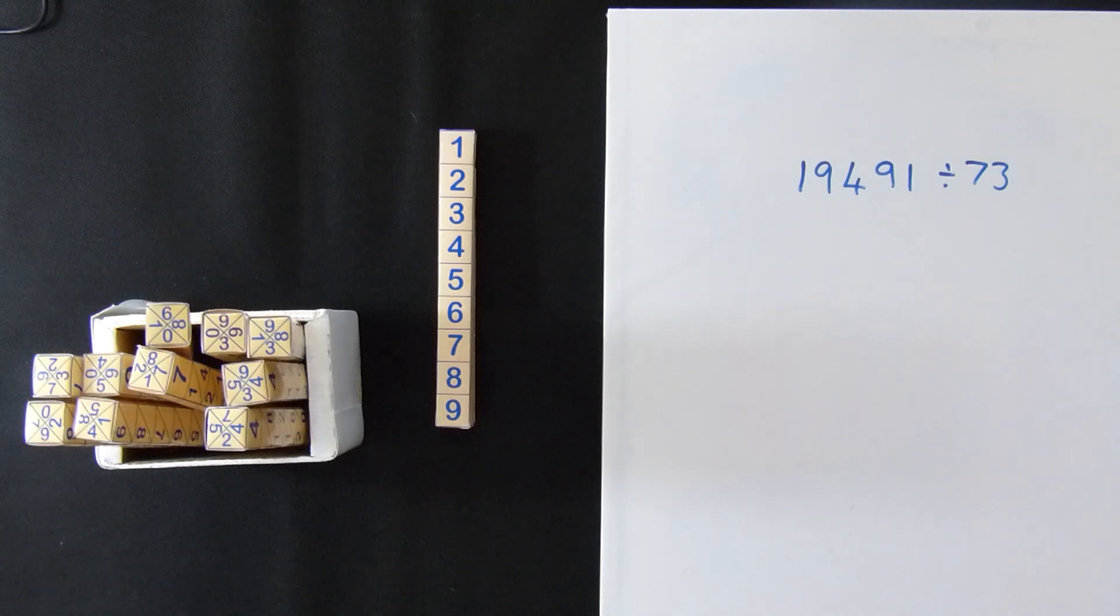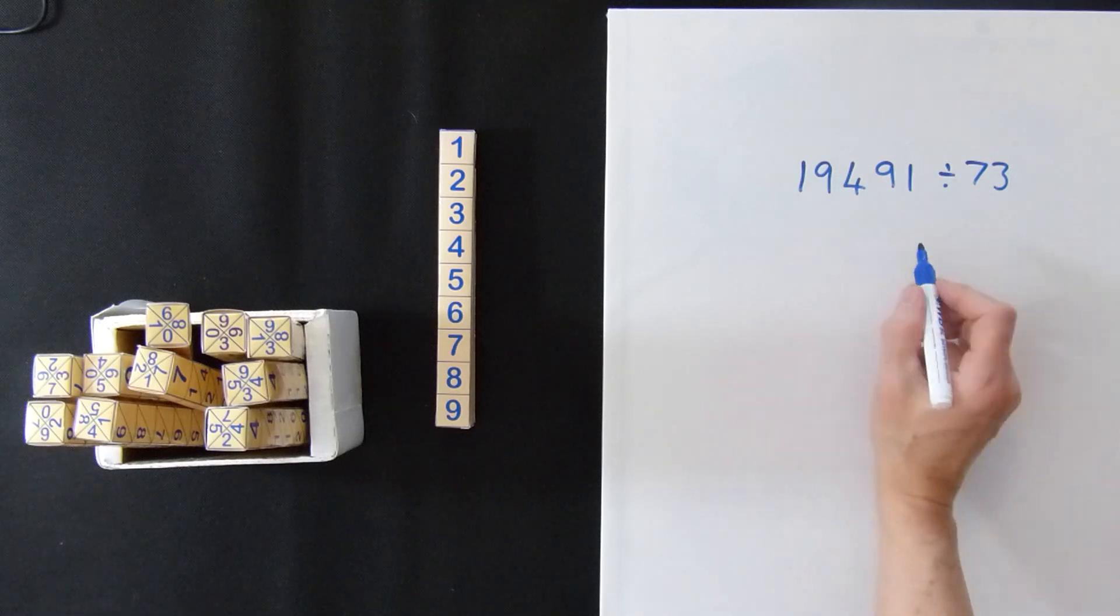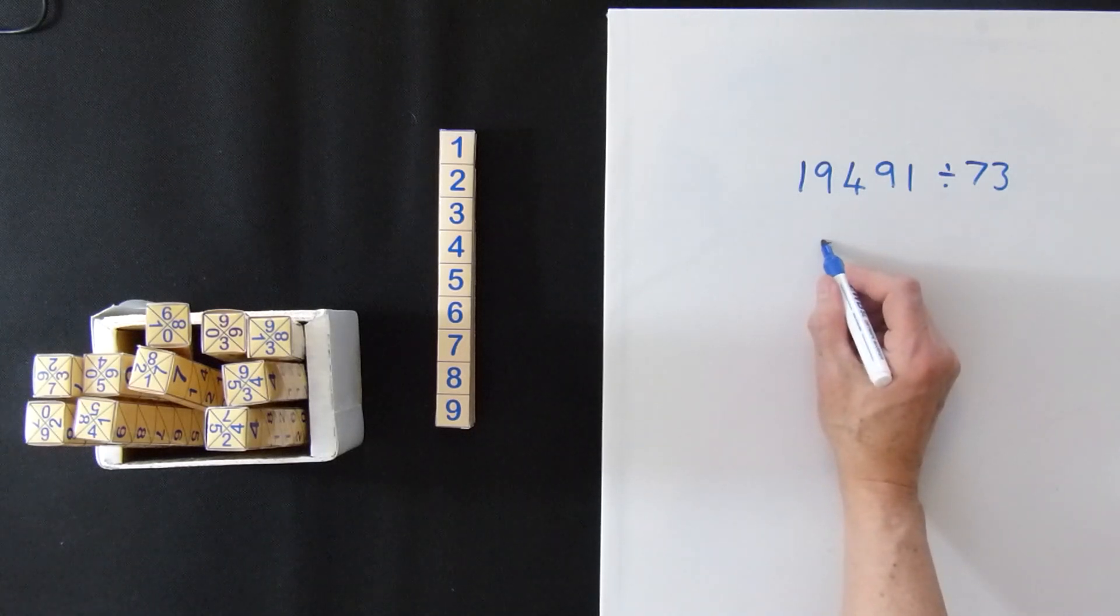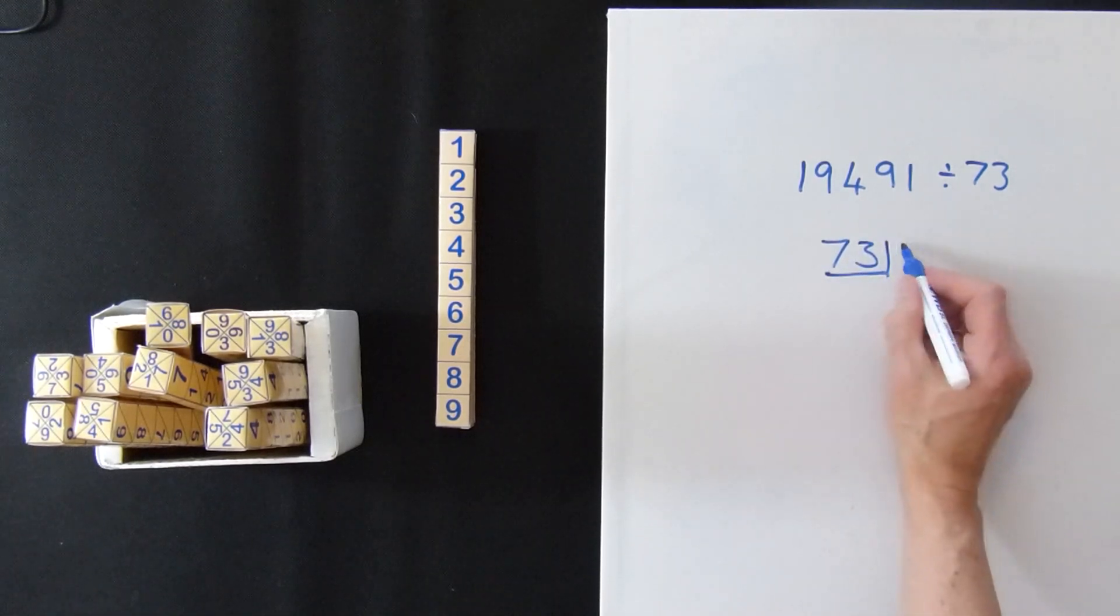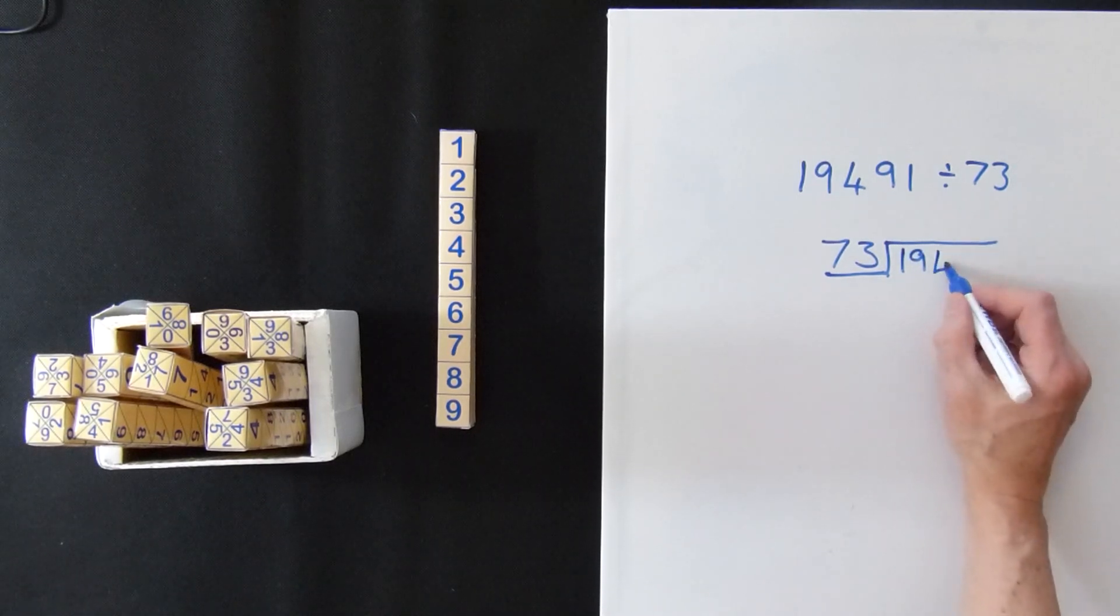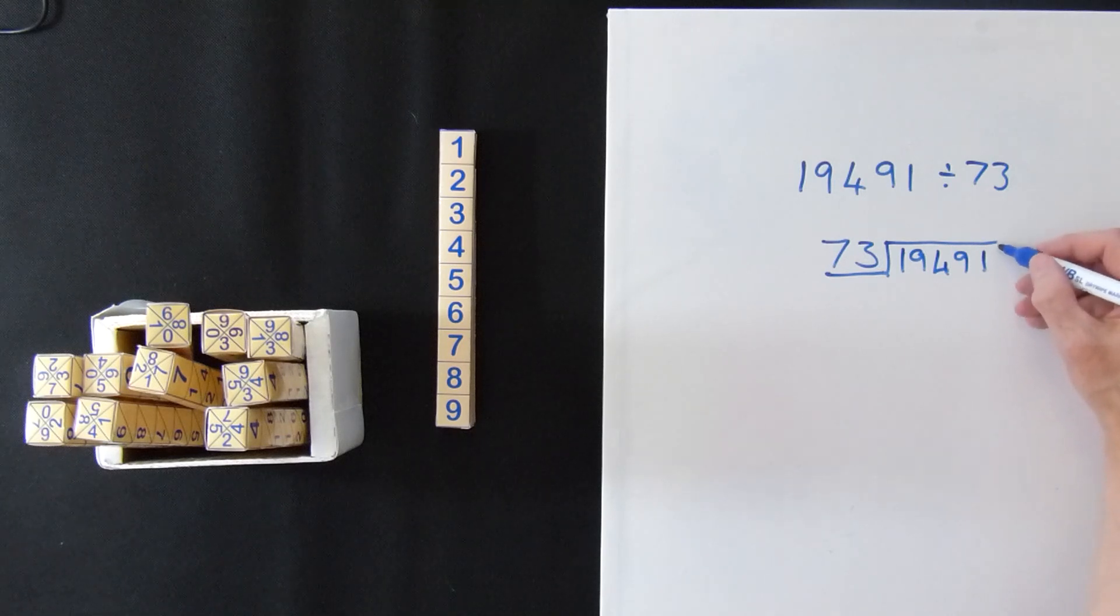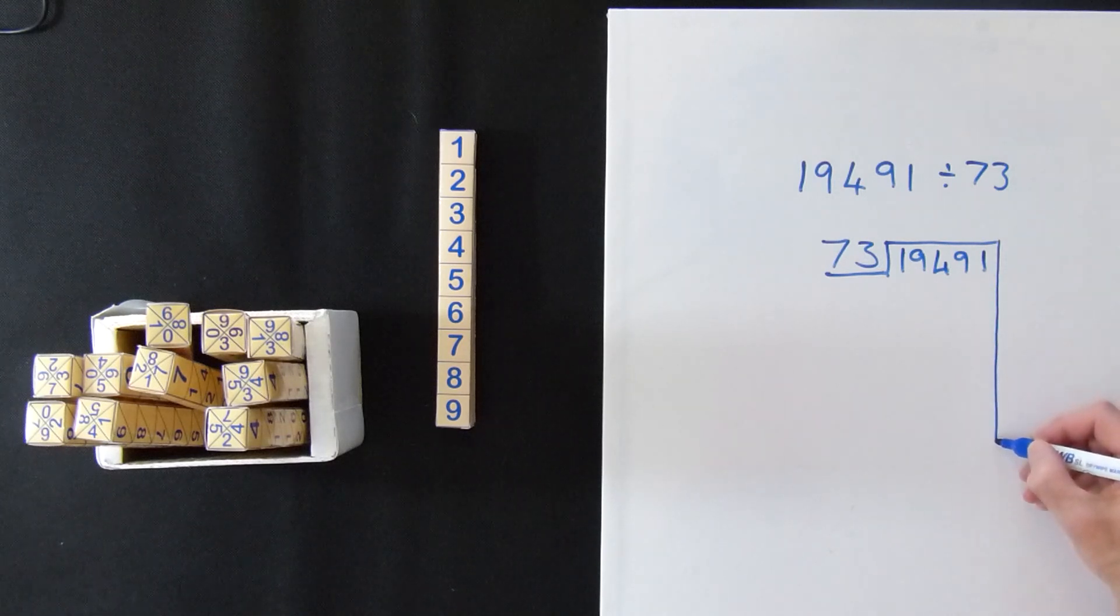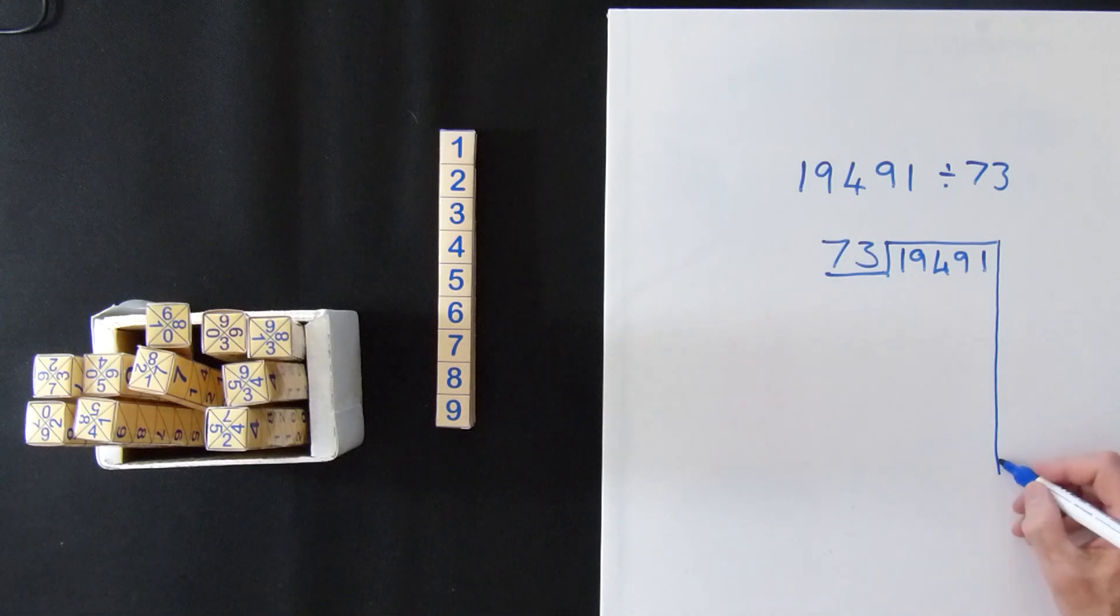Right, I'm going to write out the division. It'll be slightly different for some of you because you might not have seen the last wee line. If we go 73 into 19491 and I'm going to take a line down at that point which is something that some of you might not have seen before. We're going to do it slightly differently.